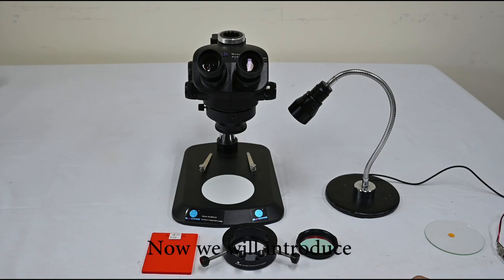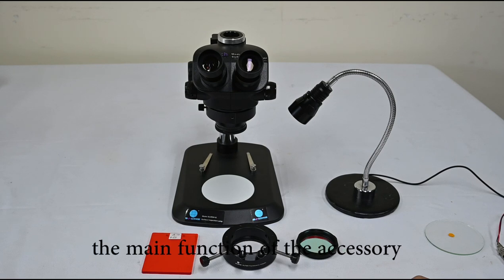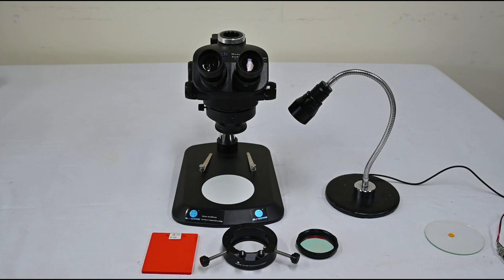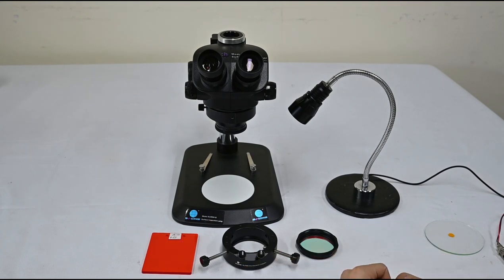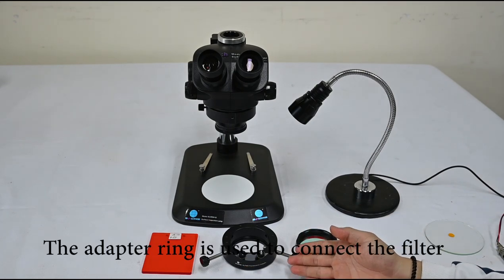Now, we will introduce how the SLF-6300 operates. First, we will introduce the main function of the accessories. The filter and the observation filter is to block the straight lights, and the adapter ring is used to collect the filter.